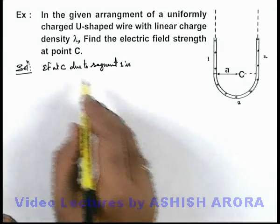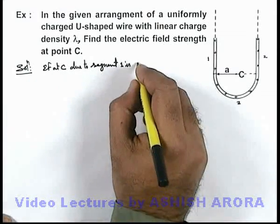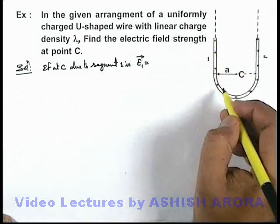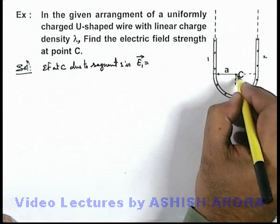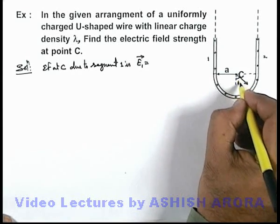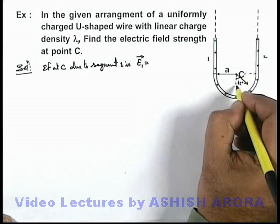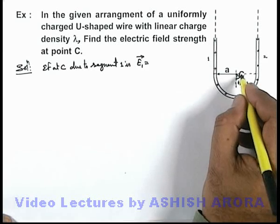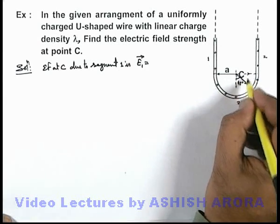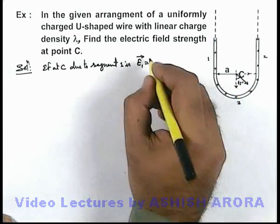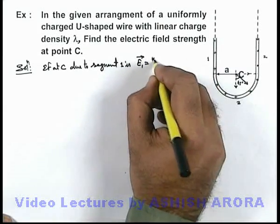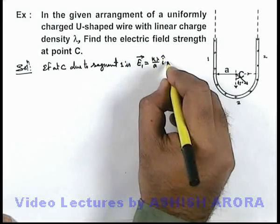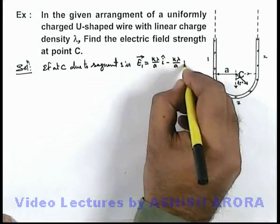The electric field at C due to segment 1, E1 vector, will exist at an angle of 45 degrees from the vertical line, with magnitude root(2)·k·λ/a. Its x and y components can each be written as k·λ/a. So E1 vector equals (k·λ/a) i-cap minus (k·λ/a) j-cap.